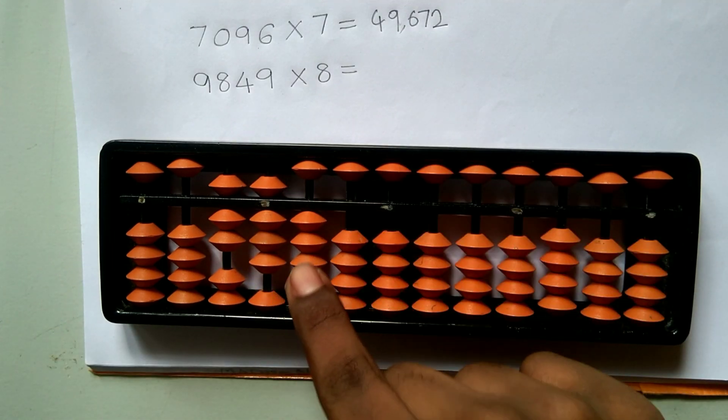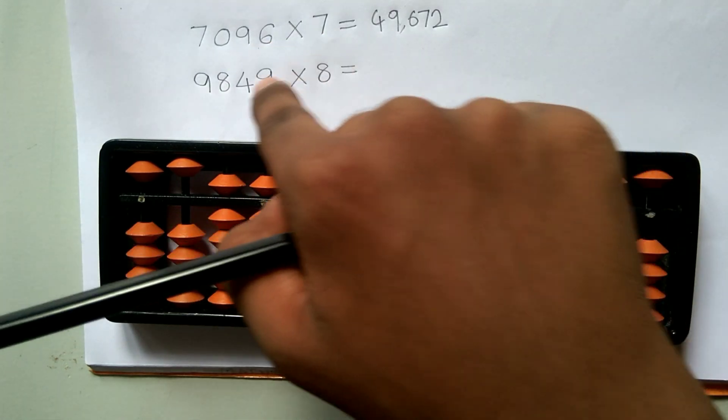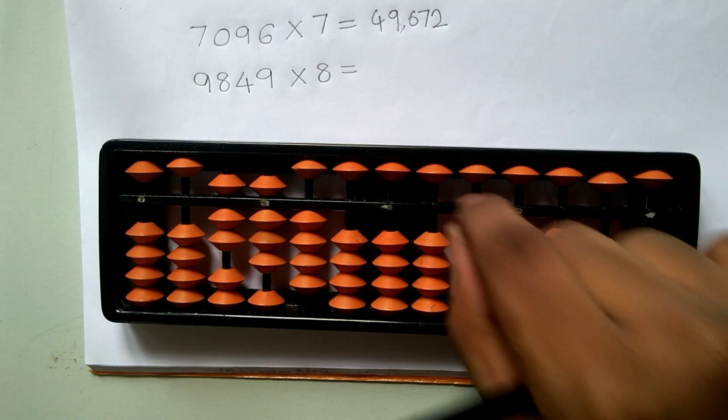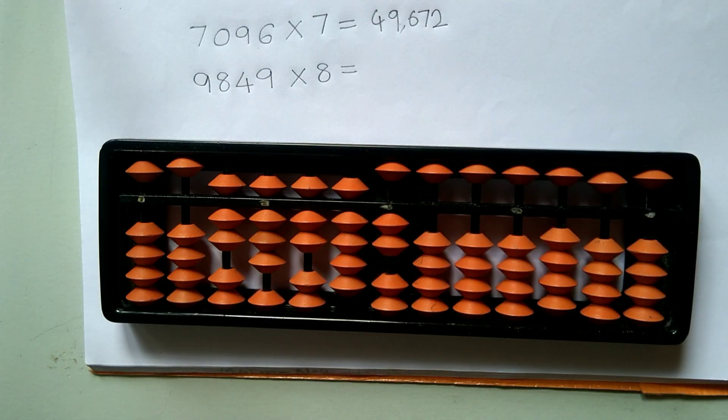And again, we have to continue from this rod itself, not the next rod. 49 × 8. 4 eights are 32. 9 eights are 72. So 392. So our final answer is 78,792.